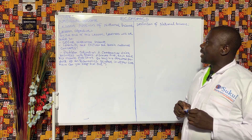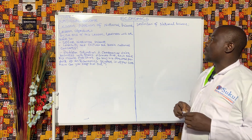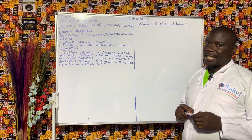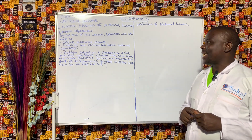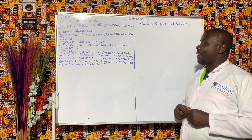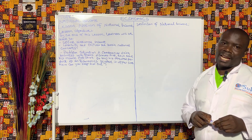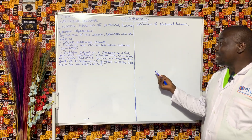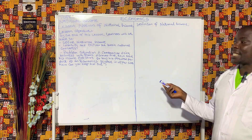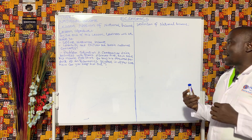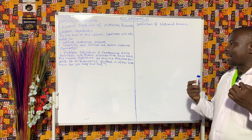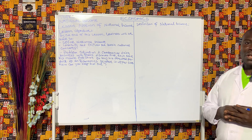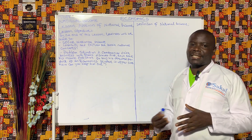Under this lesson we are going to examine the notion of national income. Our lesson objective: by the end of this lesson, you learners will be able to define national income and identify and explain the basic national income concepts. To drive this lesson, we put forth a problem situation: a Cameroonian doing business in France discovered that each time his income falls short to buy his required products. As an economics student in upper six, how can you help him out? By the end of this lesson we should be able to address this situation.